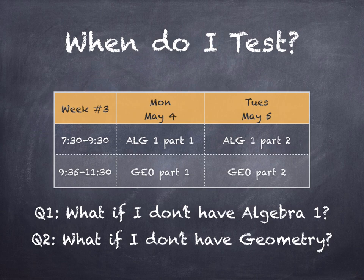What if I don't have Geometry? The same answer applies — I would attend an academic enrichment session, or I would have my parents sign for a permitted absence. What if I don't have either one of those math classes? Then you may attend two academic review sessions or sign a permitted absence for both sessions, which would entitle you to a permitted absence for the entire school day.